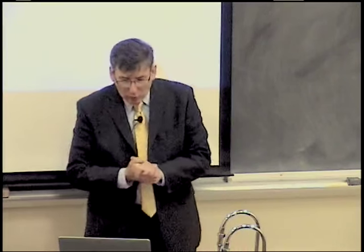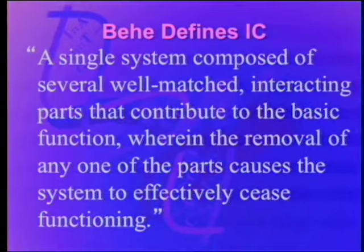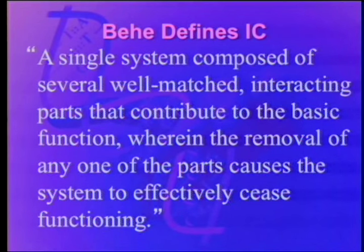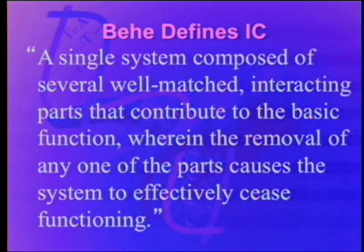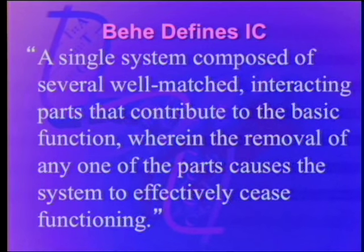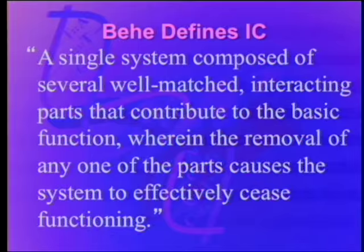Let's talk a little bit about how we might know that a system is designed. One of the ways that has been proposed is something called irreducible complexity by a guy named Michael Behe, whom you may be familiar with. He defined irreducible complexity in this way: a single system composed of several well-matched interacting parts that contribute to the basic function, wherein the removal of any one of the parts causes the system to effectively cease functioning.